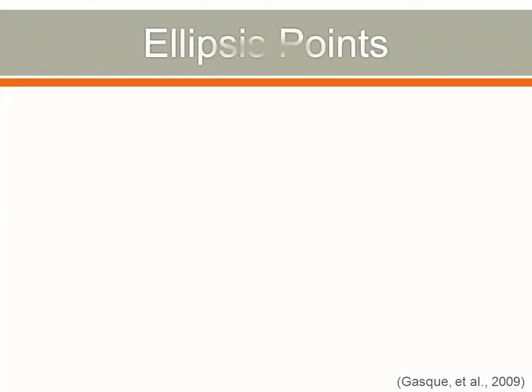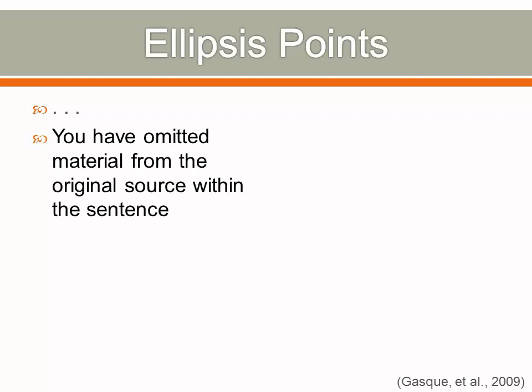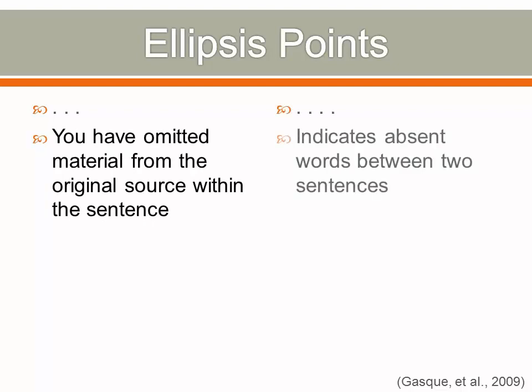For ellipsis points, use three ellipsis points with spaces in between within a sentence to indicate you have omitted material from the original source. Use four ellipsis points to indicate absent words between two sentences: the first point indicates the period at the end of the first quoted sentence, followed by the three spaced ellipsis points. Do not use ellipsis points at the beginning or end of any quotation unless it is to prevent misunderstanding or to emphasize that the quotation begins or ends in mid-sentence.